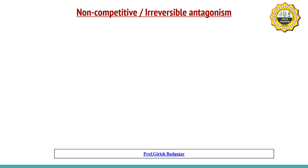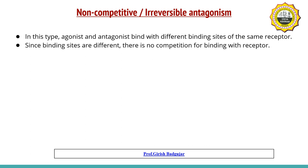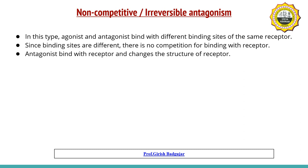The second type is non-competitive antagonism, also called irreversible antagonism. In this type, the agonist and antagonist bind with different binding sites of the same receptor. Since the binding sites are different, there is no competition for the receptor. However, the antagonist binds with the receptor and brings about changes in the structure of the receptor, as a result of which the agonist cannot bind and will not be able to produce its action.